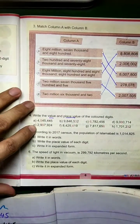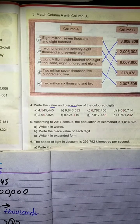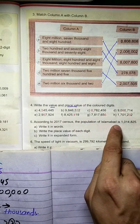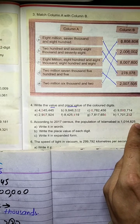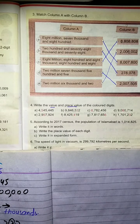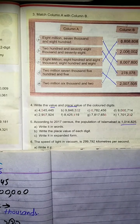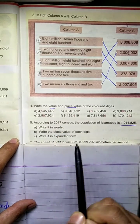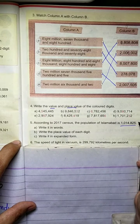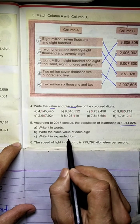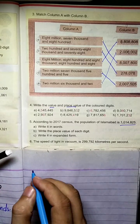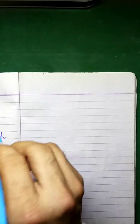We are going to try to answer the question. According to the 2017 census, the population of Islamabad is 1,014,825. We are going to write it in words, write the place value of each digit, and write it in expanded form.